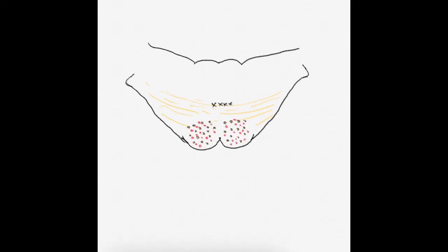The crosses in the middle represent the trapezoid body, which is the crossing over of auditory fibers. On either side of the trapezoid body, I am drawing structures in blue — these are the various lemnisci. Medially we have the medial lemniscus, then the trigeminal lemniscus, then the spinal lemniscus, and finally the lateral lemniscus. The black structure lateral to that is the spinal tract of the trigeminal nerve.